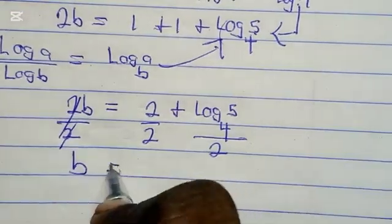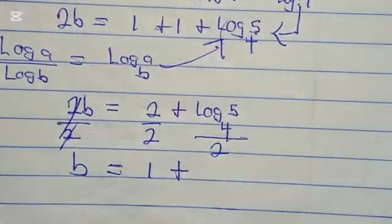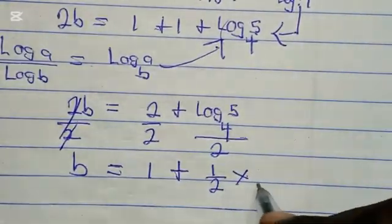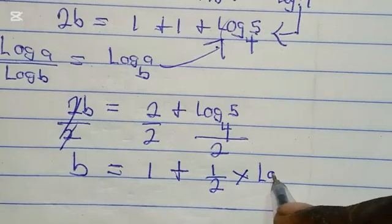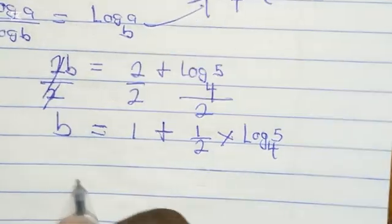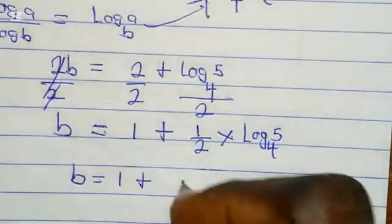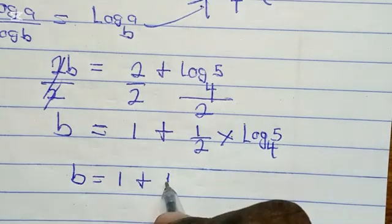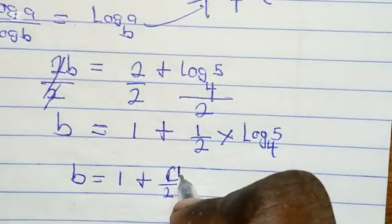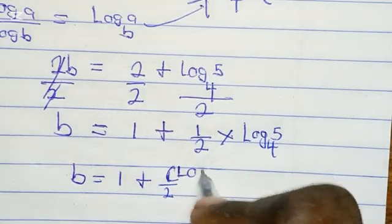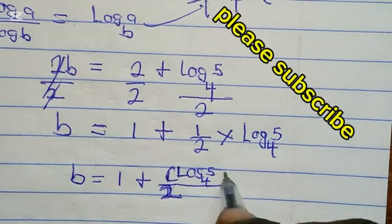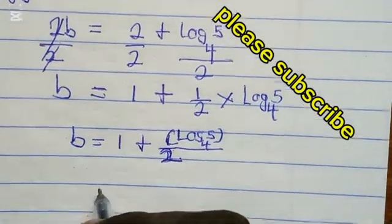We have b = 1 + (1/2) × log 5 base 4, and we can say that b = 1 + (1/2) log 5 base 4.